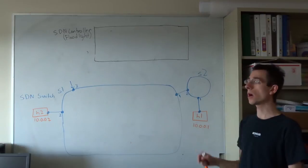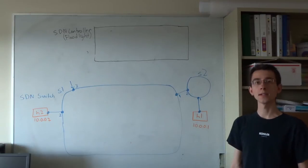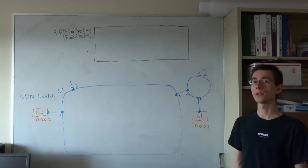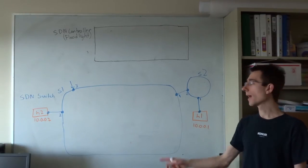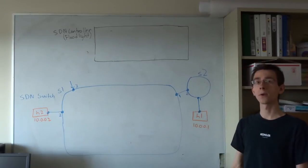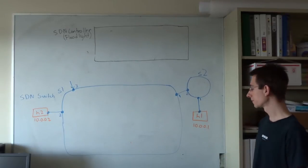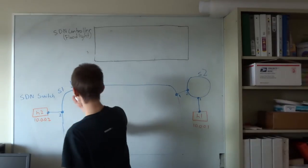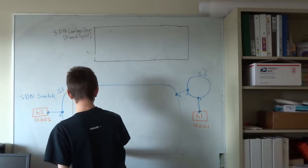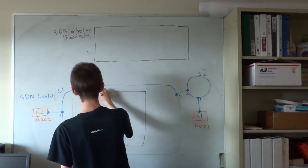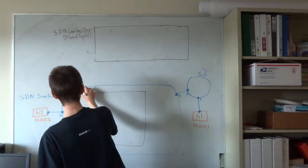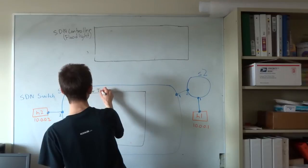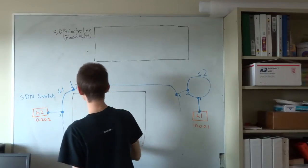We'll also have two hosts, one connected to each switch, with the IP address 10.0.0.1 and 10.0.0.2 for host 2. Within each switch is a flow table.